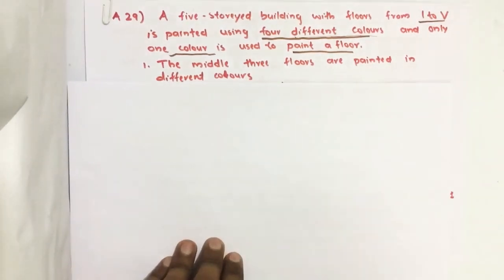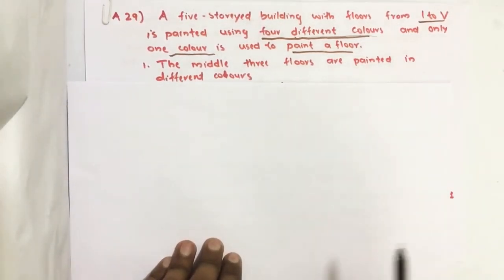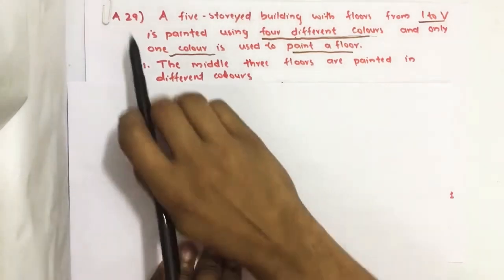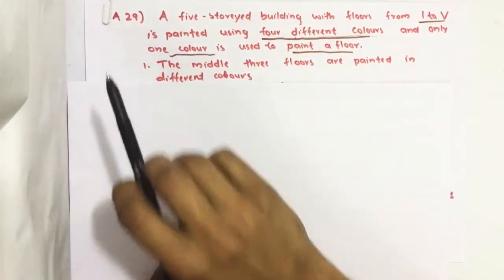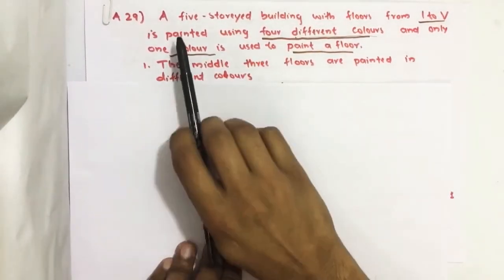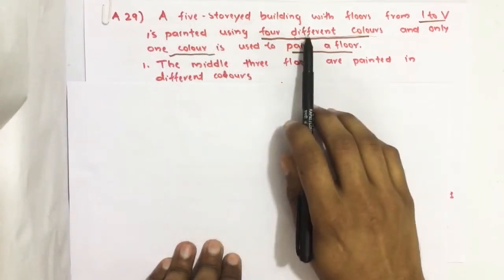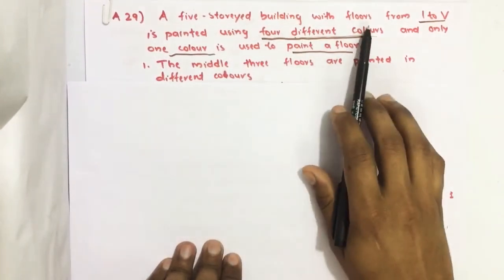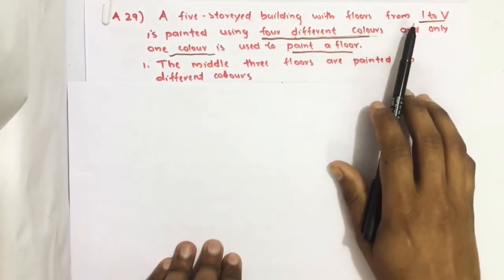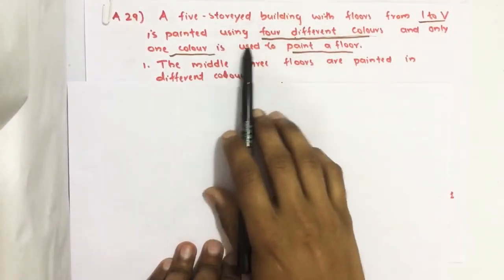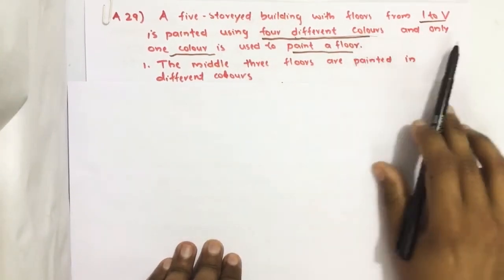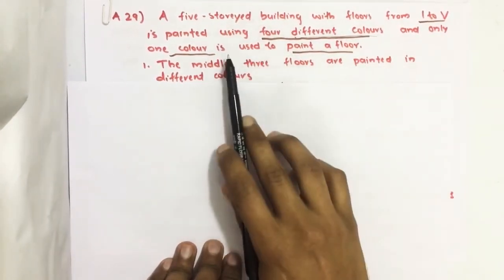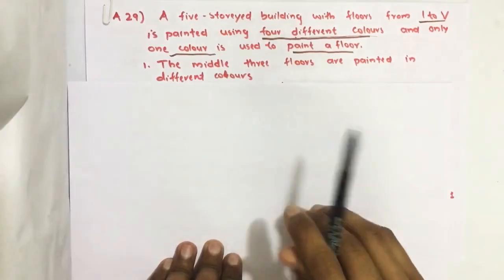Hello everyone. Here I am going to solve the 2019 CSAT question number 29 from question paper series A. A five-storey building with floors from one to five is painted using four different colors, and only one color is used to paint a floor.